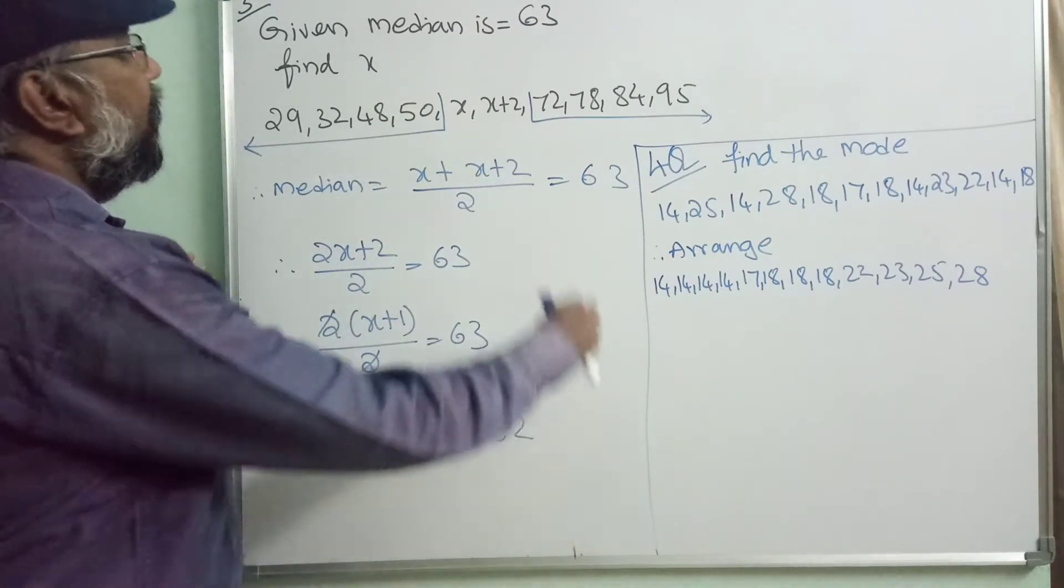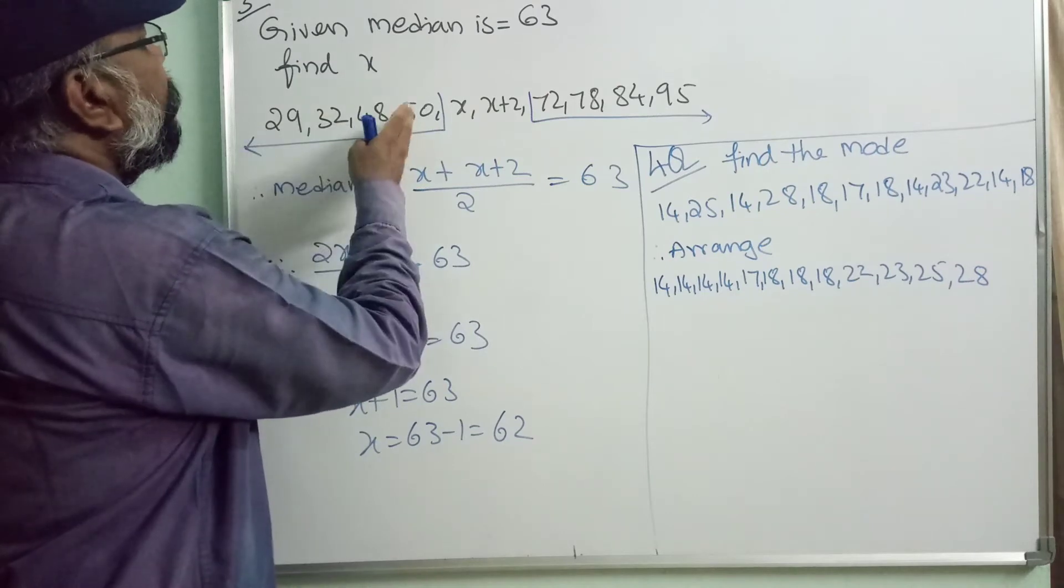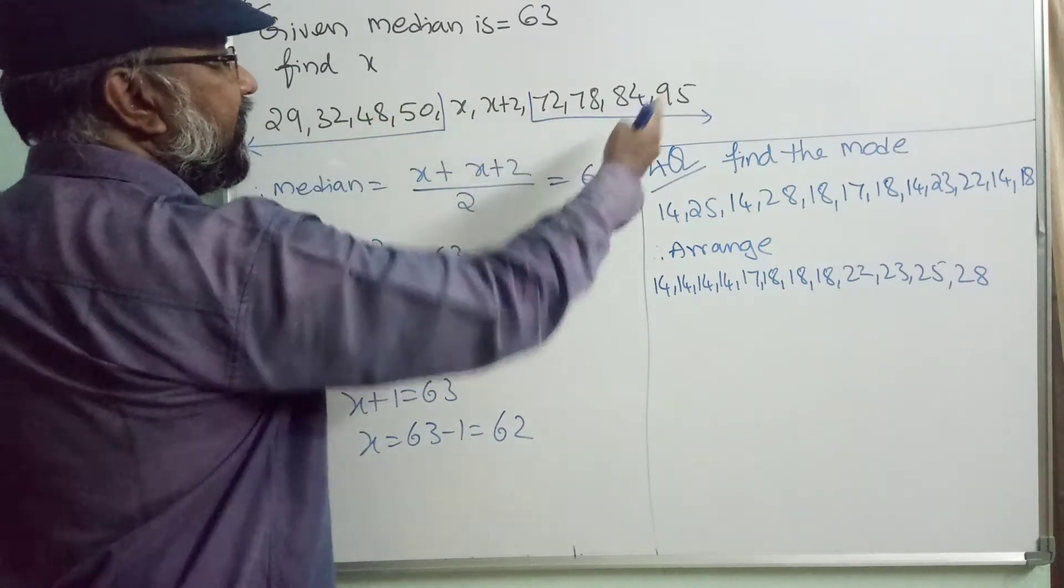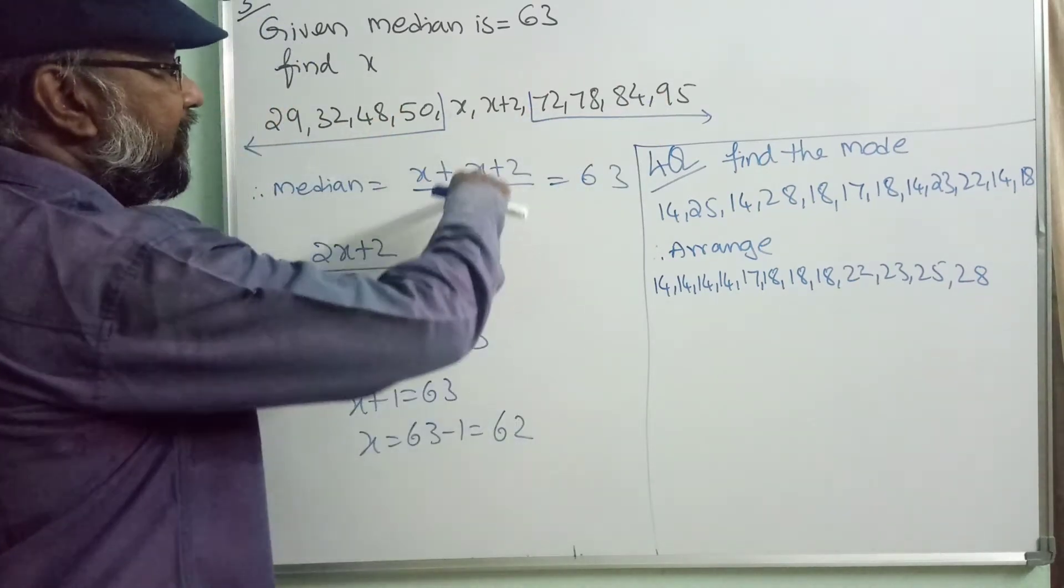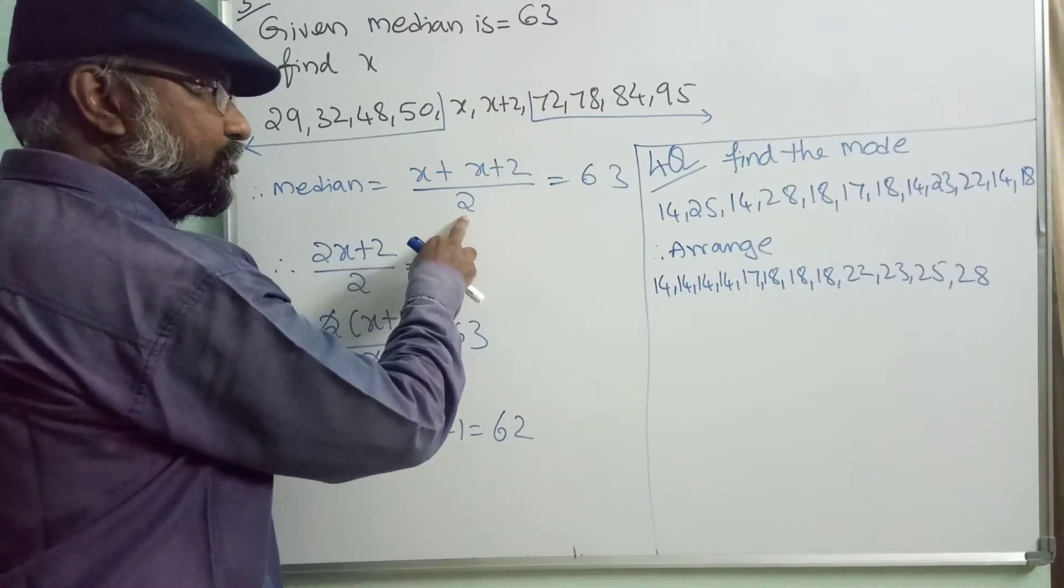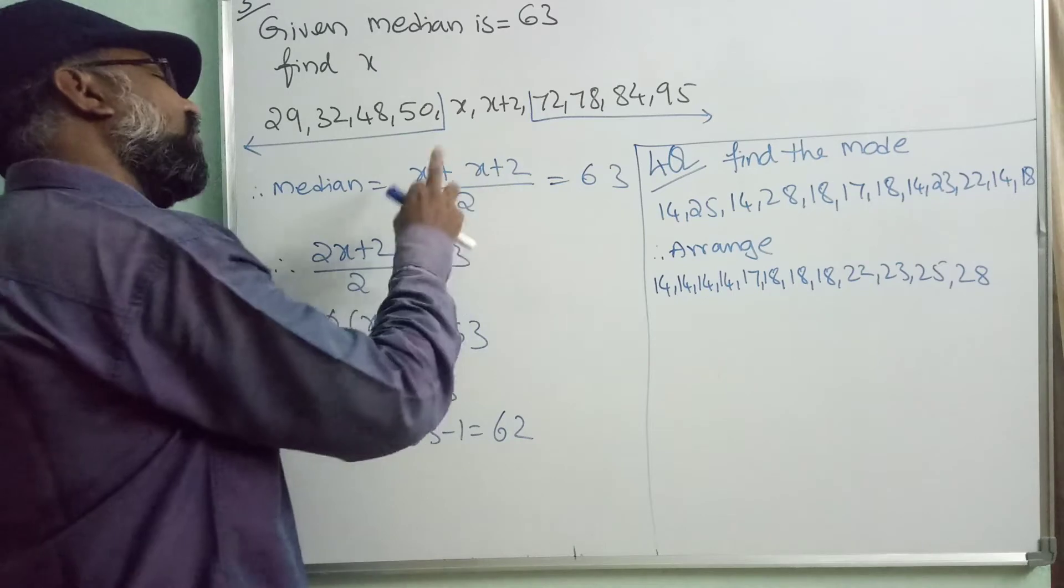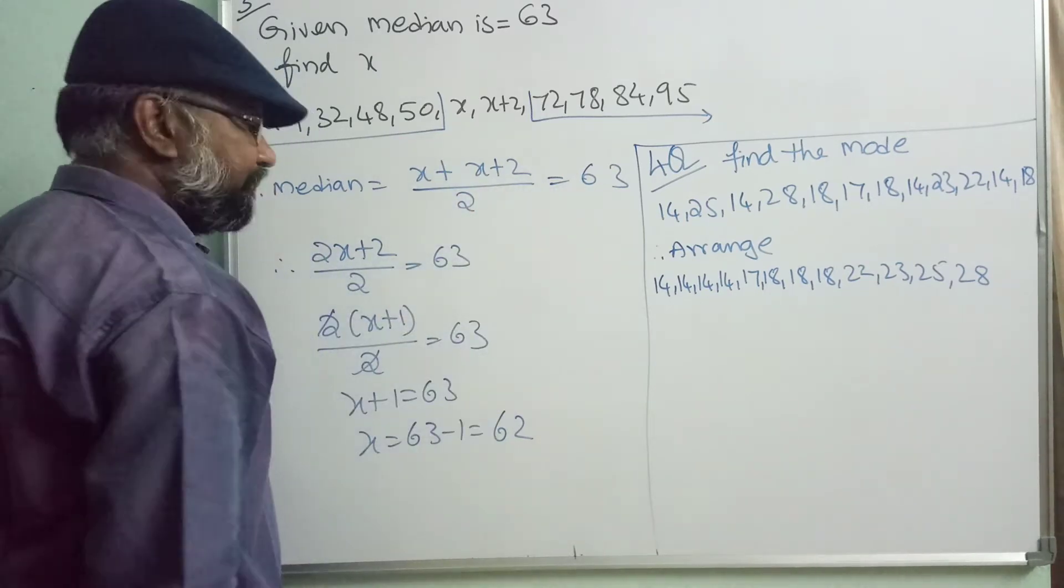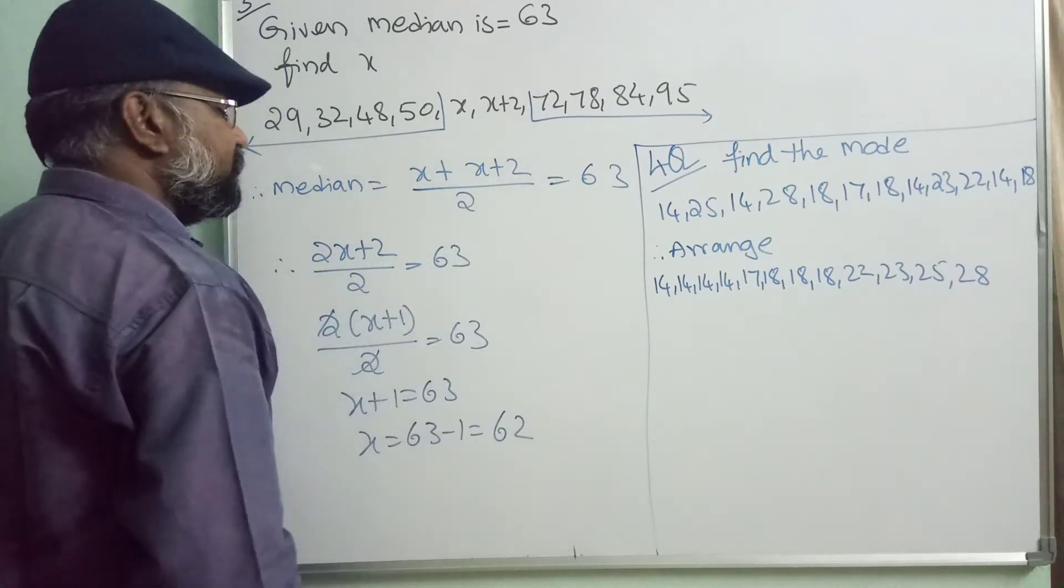Now, if you see here 4 numbers are there, in the right side we have 4 numbers, at the middle we have 2. So take those 2, divide with 2 and the median is already given as 63, so that we have equalized with 63.